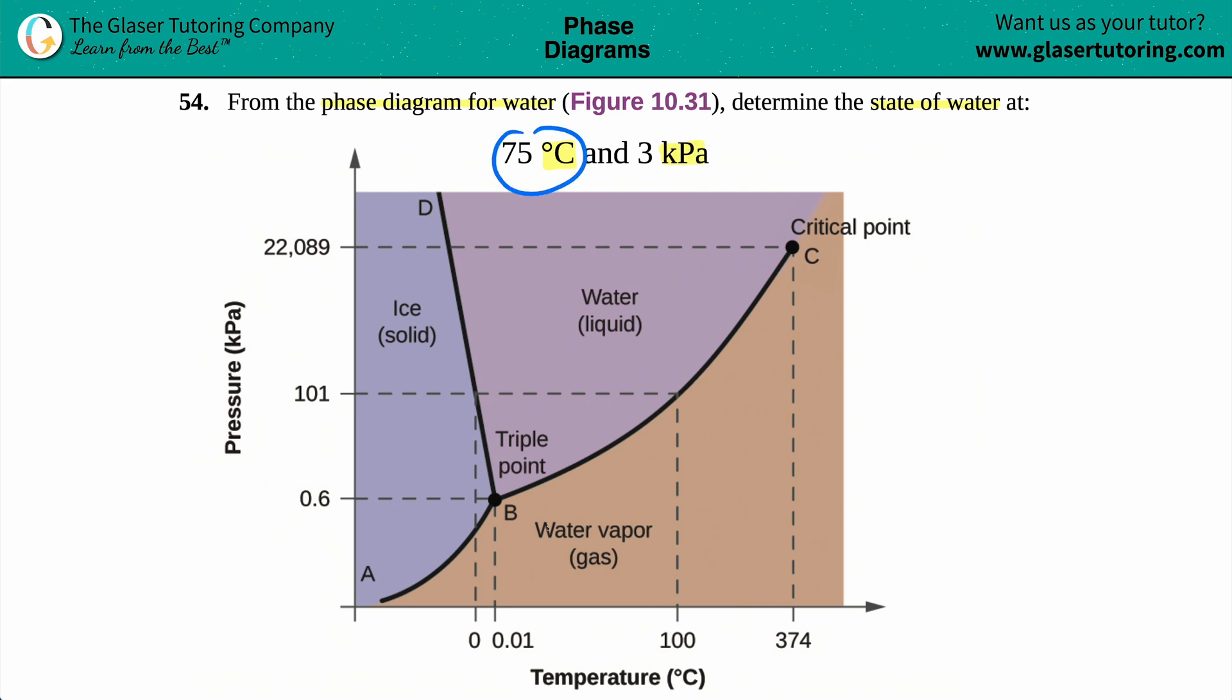The 75 degrees Celsius is the temperature, so this is basically the x-axis coordinate. We're looking for the number 75. The 3 kilopascals is the y-coordinate. So in essence, we have a point that we're looking for: we're looking for 75 comma 3, x comma y.